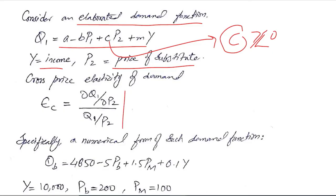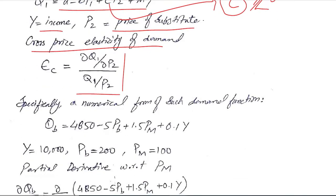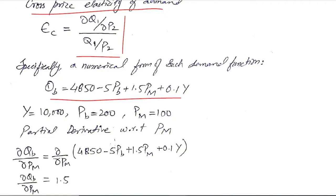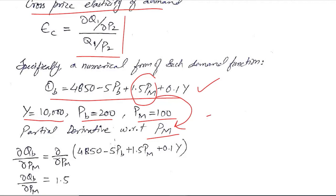Let's recall the formula we just developed — this is the formula for cross price elasticity of demand. The given values include the demand function, the value of income, and the prices of beef and mutton. We take the derivative with respect to the price of the other good, which is Pm, so we have taken the partial derivative with respect to the price of mutton.